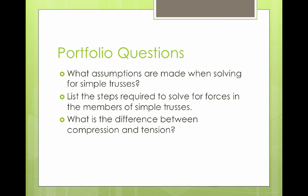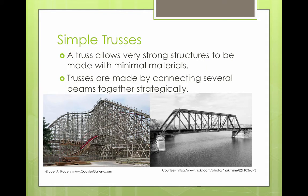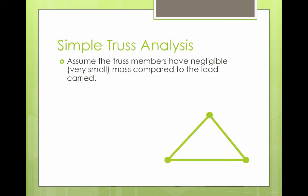A truss allows strong structures to be made with minimal materials. This really came about with the advent of steel, so that we had strong but relatively lightweight beams that could be made long. Trusses are made by connecting several beams together in a very strategic way.